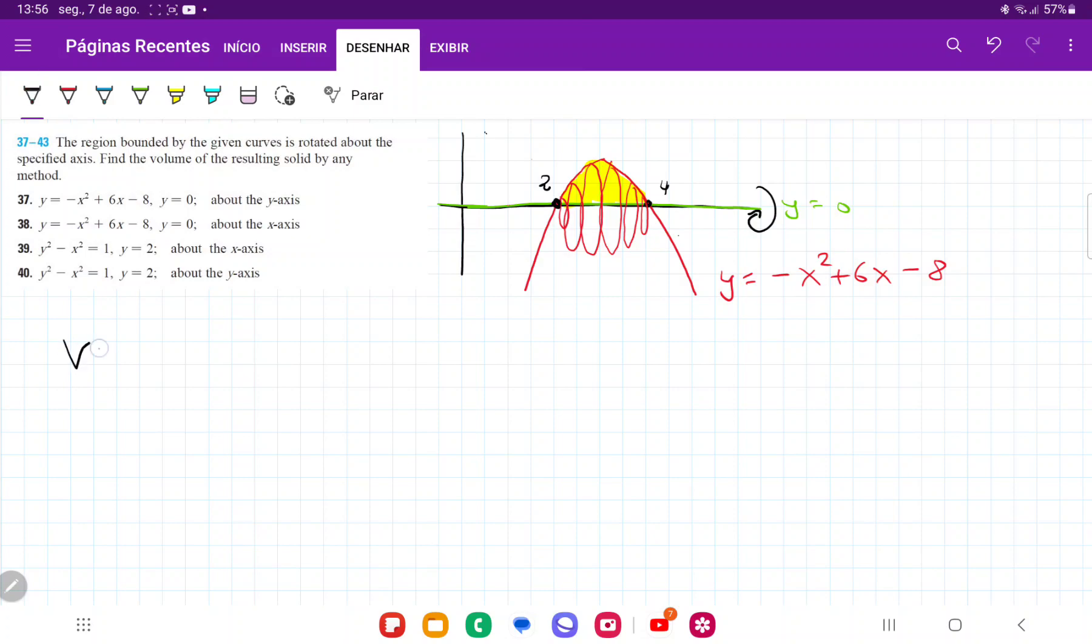So our volume is going to be the sum of all these circles from 2 to 4. And these circles have an area. So let's think about the area of the circle. The circle is going to go like this, and we're summing it up horizontally. That's why we have our dx here.